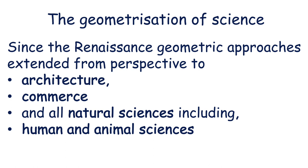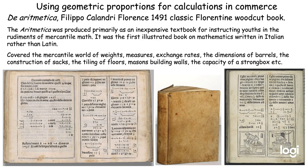The geometric approaches extended to commerce and to all natural sciences, including human and animal sciences. We've seen an example of architecture, reaching perfection in the Renaissance with bright lines which allowed the geometry of perspective to be developed. Commerce also started at the time. In the middle of the Renaissance, in this book the Arithmetica, Filippo Calandri produced a classic Florentine woodcut book — the first illustrated book on mathematics written in Italian rather than Latin.